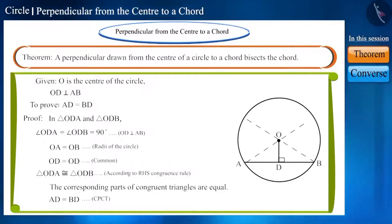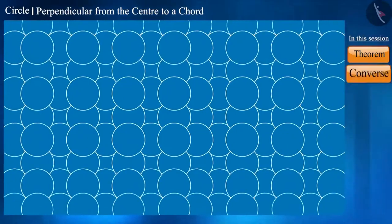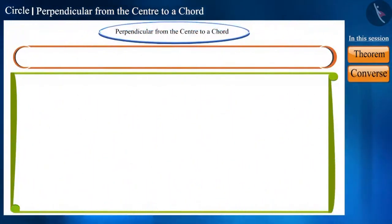Thus, we prove that a perpendicular from the centre of the circle to a chord bisects the chord. Friends, will the converse of this theorem also be true? That is, if we say, a line drawn through the centre of a circle to bisect a chord is perpendicular to the chord, will the statement be true?